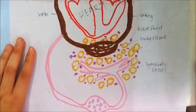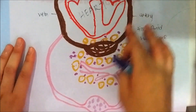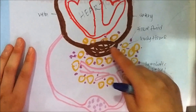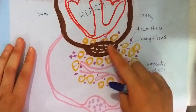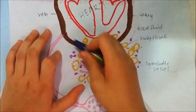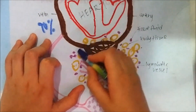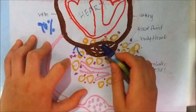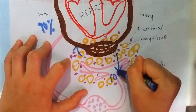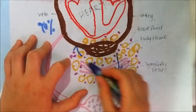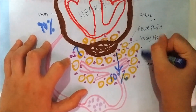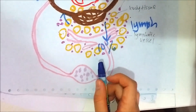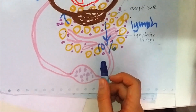Now let's look at another diagram. This is the heart, and this is the artery. Blood from the arterial end diffuses out through the one-cell-thick capillary wall to form tissue fluid. 90 percent of the tissue fluid flows back to the vein of the blood capillary, but 10 percent flows into the lymphatic vessel. The fluid in the lymphatic vessel is known as lymph.